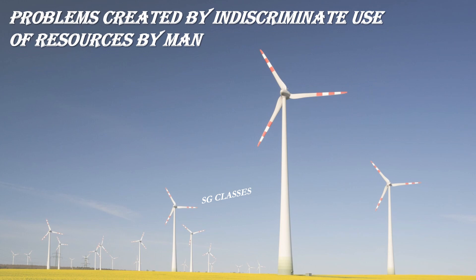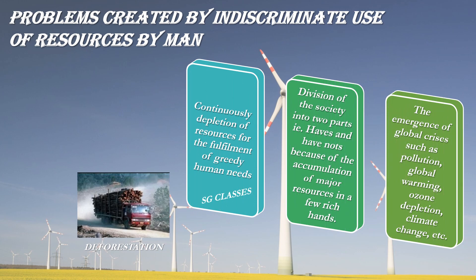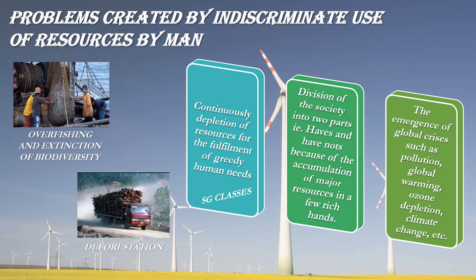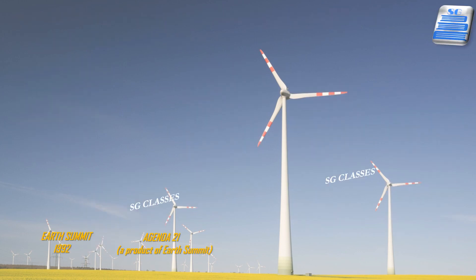The problems created by the indiscriminate use of resources by man include: many resources getting depleted — for example, forests; resources getting accumulated in the hands of a few people; society becoming divided into rich and poor; and issues like global warming, ozone layer depletion and environmental degradation.